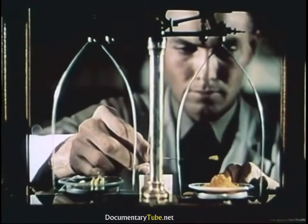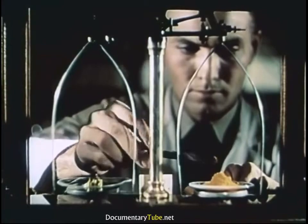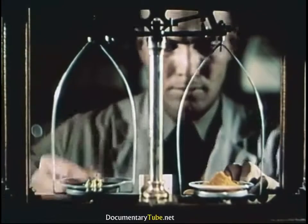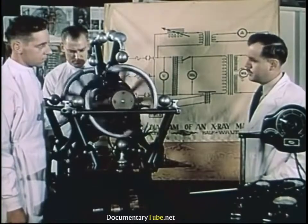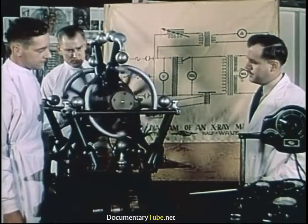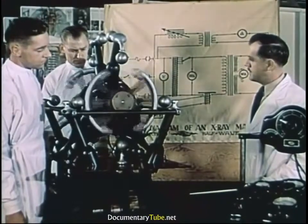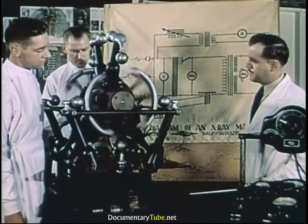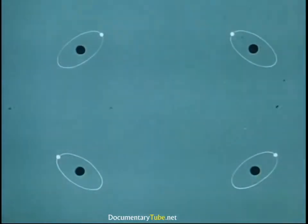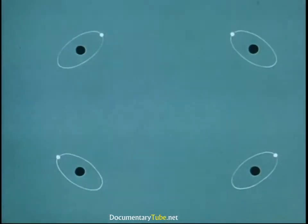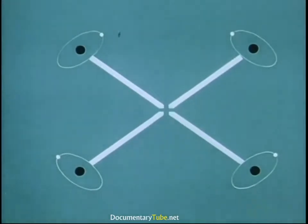In trying to bring about such an explosion, scientists had two recipes — two blueprints to follow. The first called for nuclear fusion. To illustrate: here are four hydrogen atoms. If fused — brought together under proper conditions — they form one helium atom.